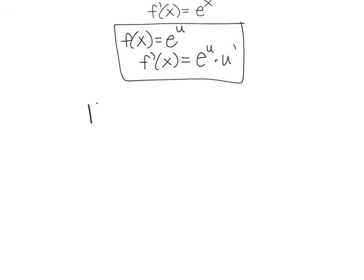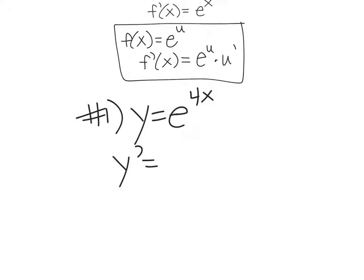Number one: find the derivative. y equals e to the 4x. There are two functions going on here: the outer function, which is e to the stuff, and the inner function, which is 4x. So you have to do chain rule. The derivative of e to the 4x is just itself, leaving the inner function alone, and then times the derivative of 4x, which is 4. We write this as 4e to the 4x.